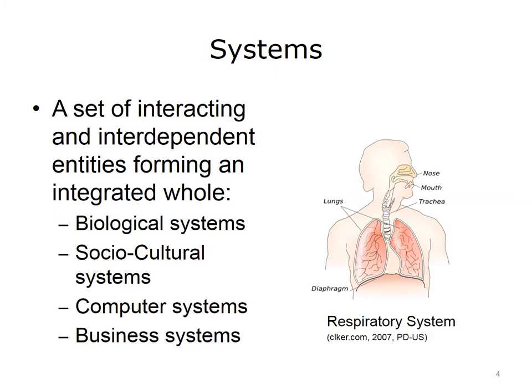Systems are groups where individual pieces work together as a whole to complete tasks. The individual pieces can be people, parts, components, pieces, units, or whatever makes up the collection or group. For example, a biological system is a group of organs working together to provide life requirements such as circulation, respiration, digestion, and reproduction.